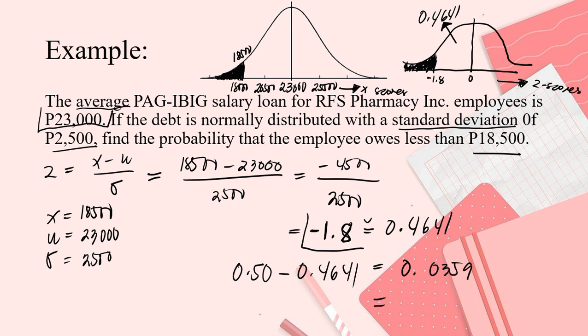So 0.50 minus 0.4641, that is 0.0359. And when you transform it into percentage, multiply it by 100, that is 3.59%. And this will be your final answer, which is this. Because this 0.4641 is from the mean. But what you're looking for is less than. So, you will subtract it from 0.50.